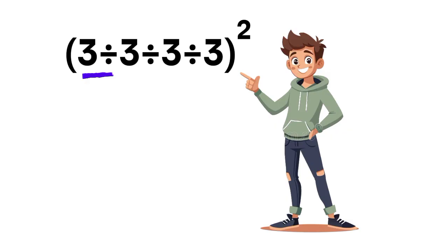The expression is 3 divided by 3 divided by 3 divided by 3, and then the whole thing squared.